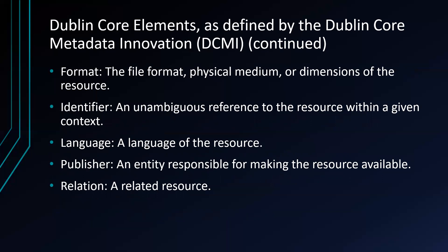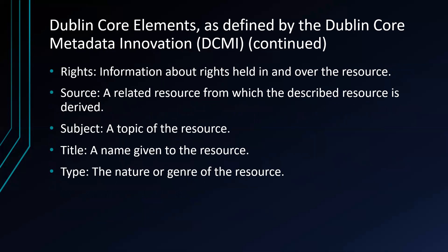An identifier is an unambiguous reference to the resource within a given context — it could be the ISBN number or call number. The language is the language of the resource. The publisher is the entity responsible for making the resource available. The relation refers to a related resource — is it part of a series or another record? The rights covers information about the rights held in and over the resource — is it owned by the facility, on loan, or is there a license? The source is a related source from which the described resource is derived, such as a website or a scan of a painting. The subject is the topic of the resource. The title is the name given to the resource. The type is the nature or genre of the resource.